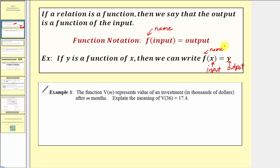Let's look at an example. The function v of m represents the value of an investment in thousands of dollars after m months. We're asked to explain the meaning of v of 36 equals 17.4. Looking at our function notation, the input is 36, where the input m represents the number of months.